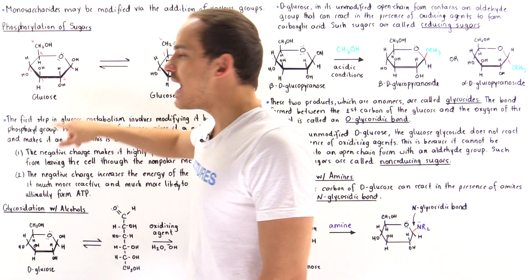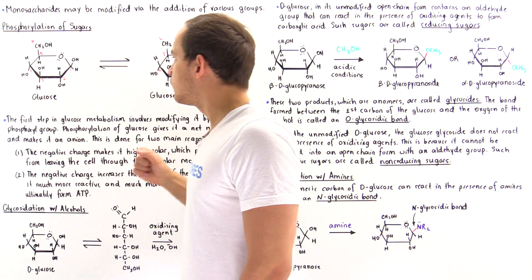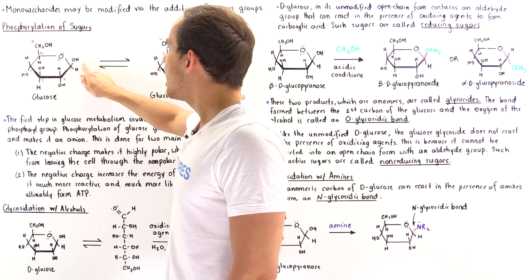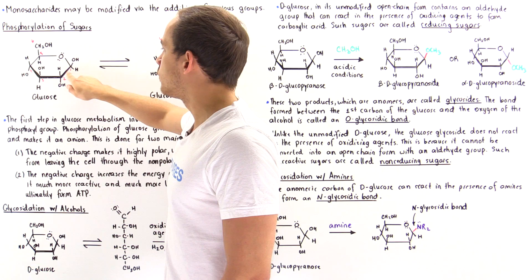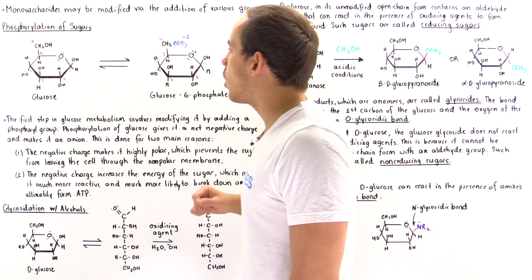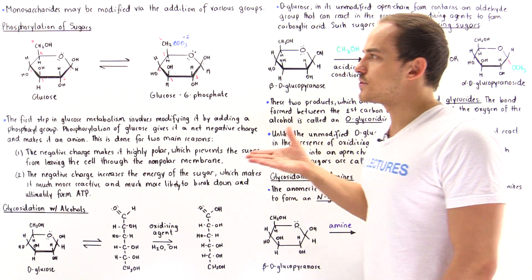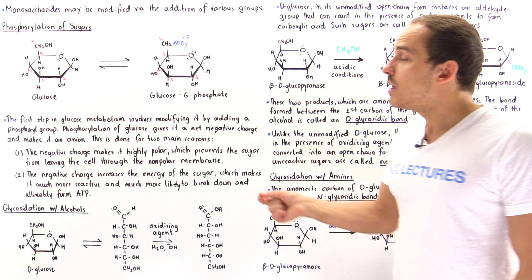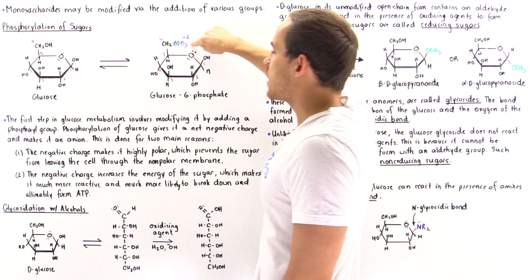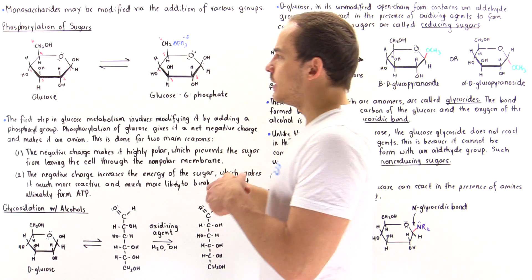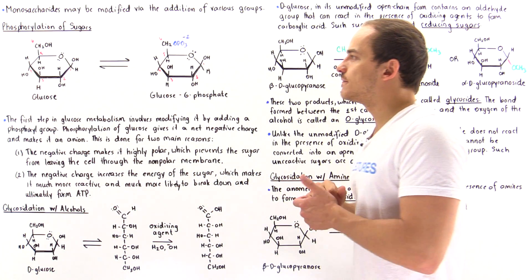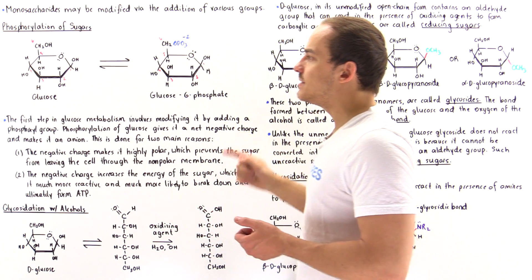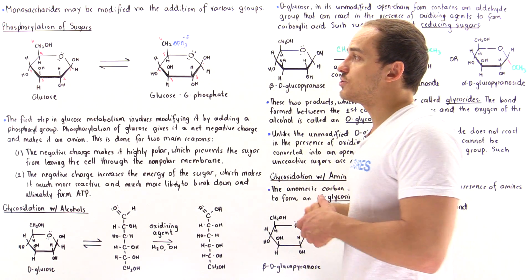On the reactant side, we have the beta anomer of the cyclic form of glucose, with carbon 1, 2, 3, 4, 5, and 6. Carbon 1 is the anomeric carbon, and it's the beta anomer because the hydroxyl group on carbon 1 points in the same direction as the group attached to carbon number 5. In the process of phosphorylation, when we transform glucose into glucose 6-phosphate, we add the phosphoryl group onto carbon number 6. The major difference is the presence of this modified group, which contains a net negative charge — specifically a charge of negative 2.